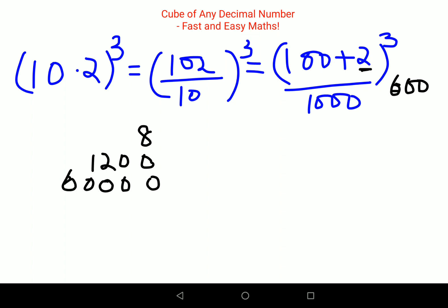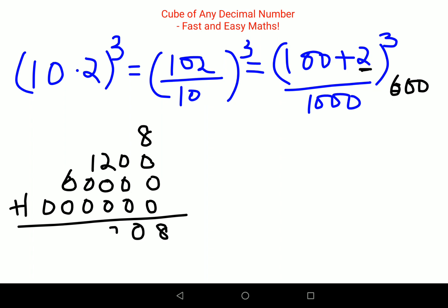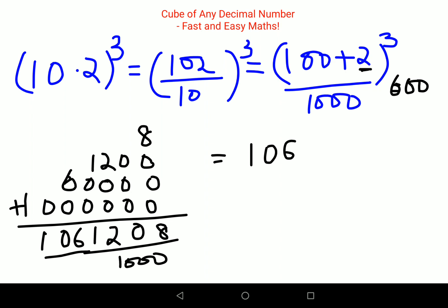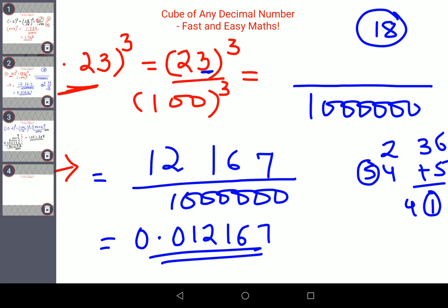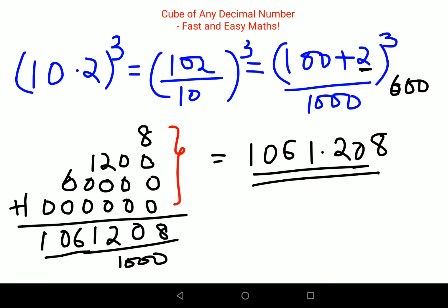Then 100 cube is 1,000,000. Now all you have to do is add them vertically: 8, 0, 2, 1, 6, 0, 1 — giving 1,061,208. This gets divided by 1000, so your final answer is 1061.208. When it comes to a 3-digit number it is always better to do the addition this way rather than the previous method. The previous method works for 2-digit numbers, but for 3-digit numbers many students have made errors, so I recommend this vertical addition method — it works much faster and much better.